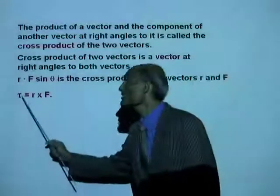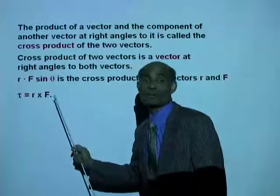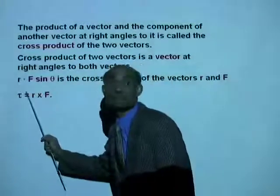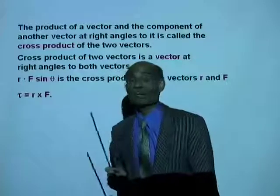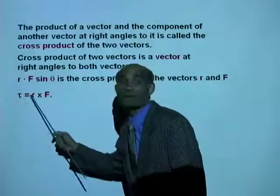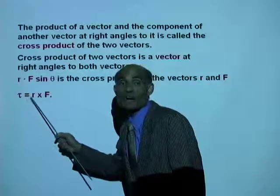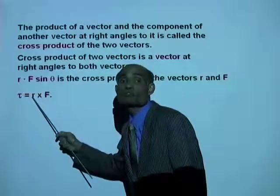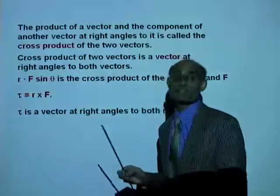And we write it like this: tau equal to R cross F. Tau is a vector quantity — it has a direction. What is the direction of tau? The tau is directed at right angles to both the R vector and the F vector.